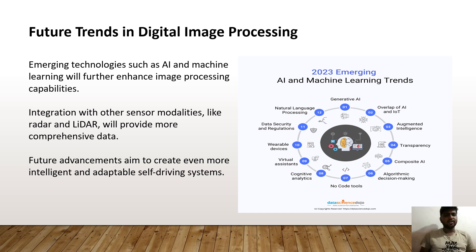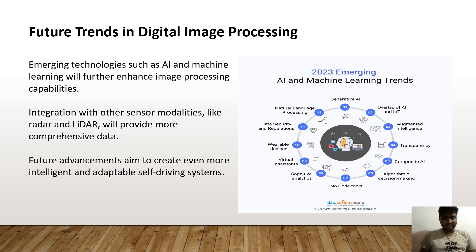Future trends in digital image processing include emerging technologies such as artificial intelligence and machine learning, which will further enhance image processing capabilities. Integration with other sensor modalities like radar and LiDAR will provide richer data. Further advancements aim to create increasingly intelligent and adaptive self-driving systems.